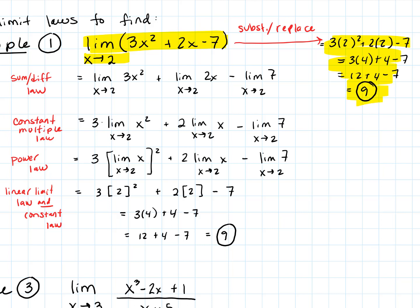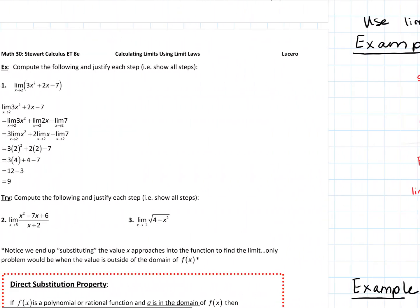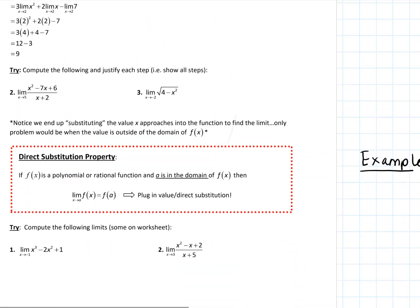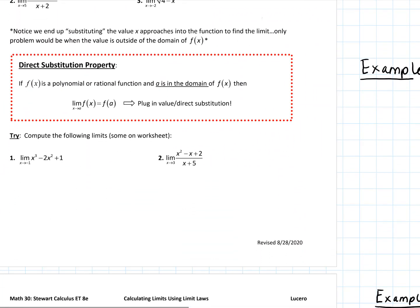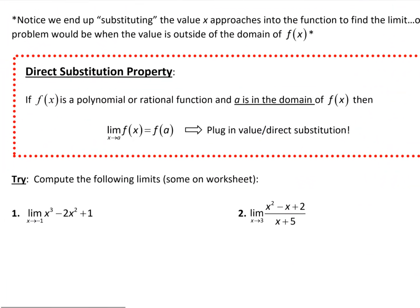So intuitively, the limit laws work as we would expect them to work with functions. When we have a nice behaving function like a polynomial, then we can do what is called just a substitution or replacement — direct substitution.